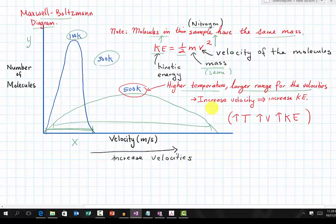Therefore, we have the relationship between temperature, velocity, and kinetic energy. They are directly proportional. If temperature goes up, the velocity goes up, and the kinetic energy goes up. If the temperature goes down, the velocity goes down, and the kinetic energy goes down.